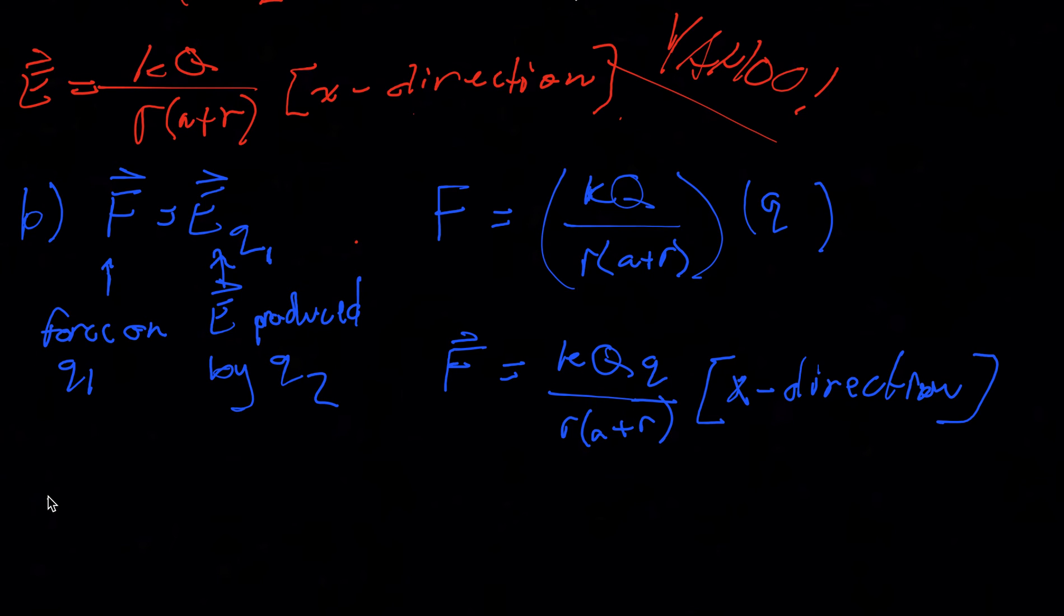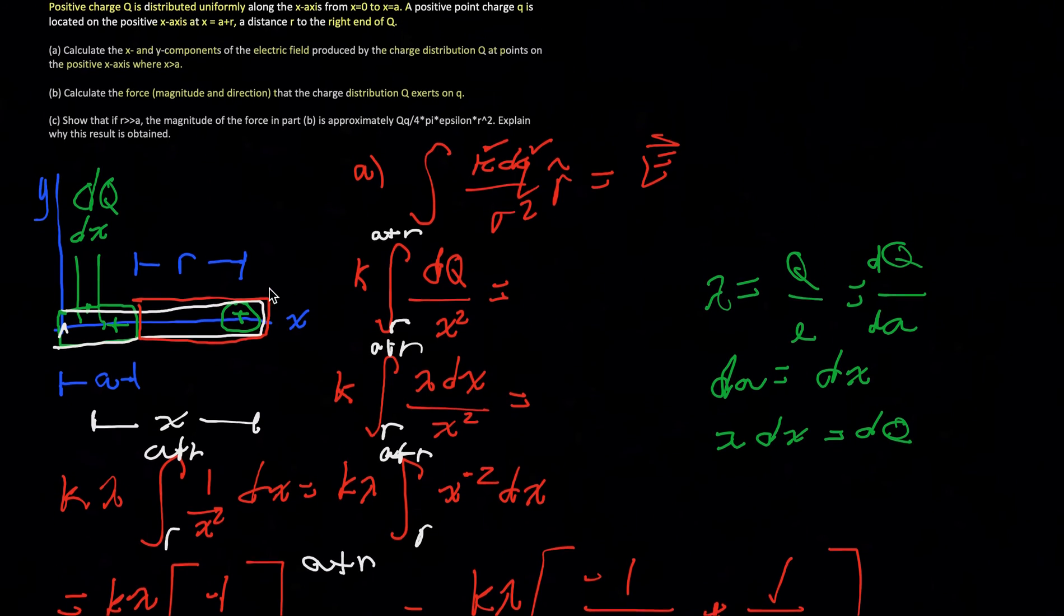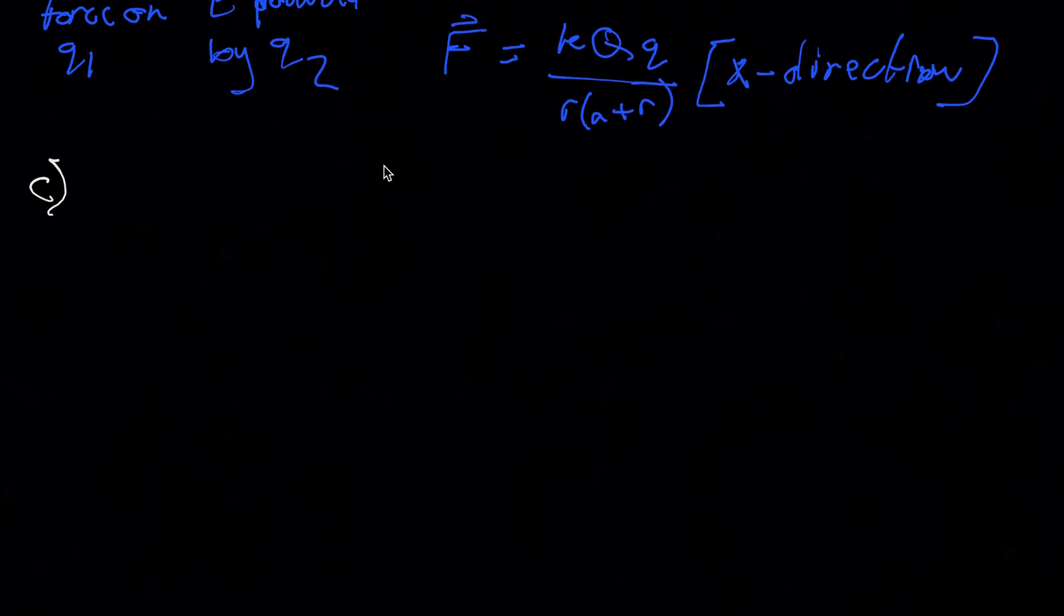And then for the final one, we get to use white. And that question is, show that if r is much, much greater than a, the magnitude of the force in part b is approximately this guy. Okay, so for that, let's say we're saying that r is much, much greater than a. So let's just put some numbers to it. Let's say that that r is some, let's say, 12 trillion kilometers, and that a is less than a centimeter. Does it really make sense to include a in this equation here? And, I don't know, to my way of thinking, it really doesn't. So, what we're going to do is we're just going to say that that is zero.